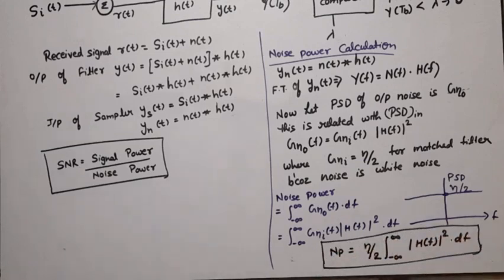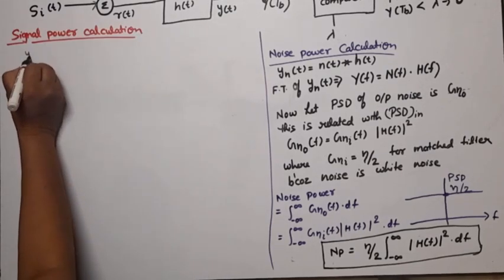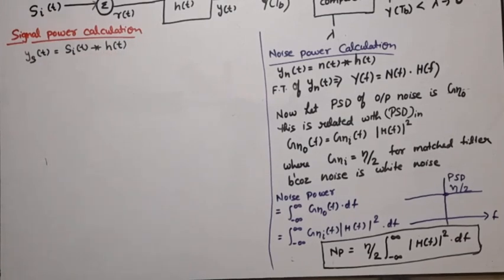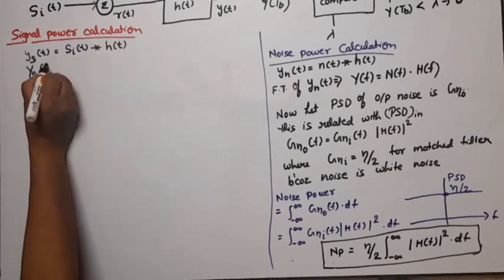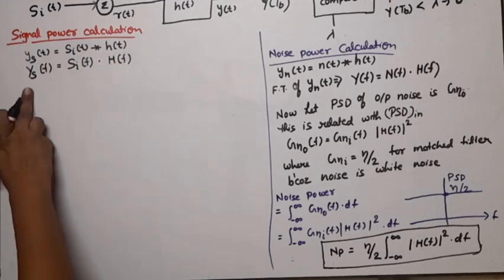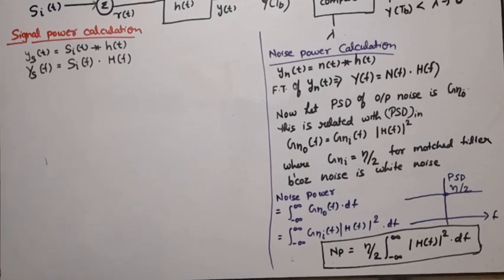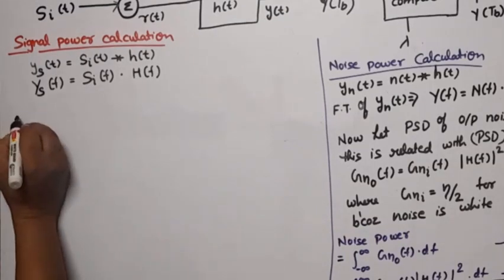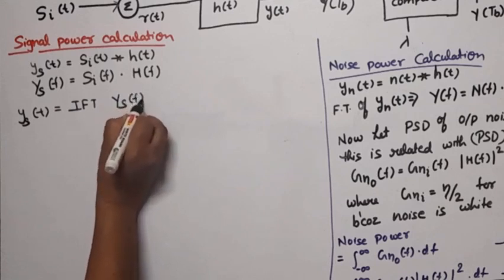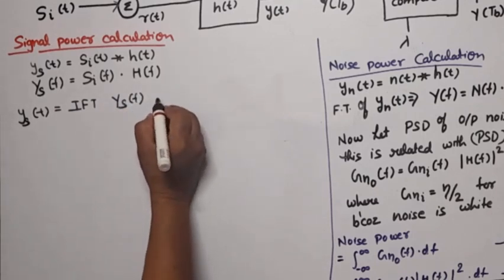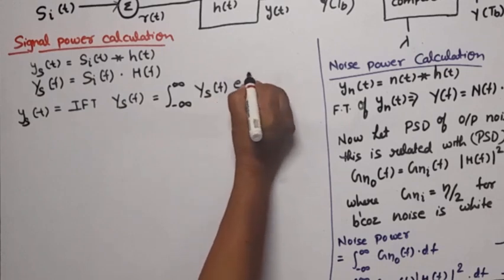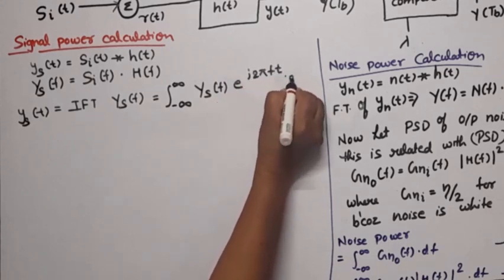Now we need signal power. The input of the sampler due to signal was y_s(t) = s_i(t) * h(t). Taking the Fourier transform: Y_s(f) = S_i(f) · H(f). Taking the inverse Fourier transform, y_s(t) = integral from −∞ to ∞ of Y_s(f) · e^(j2πft) df.